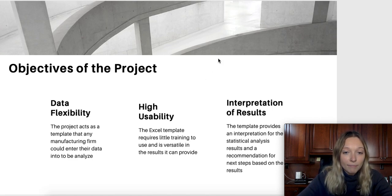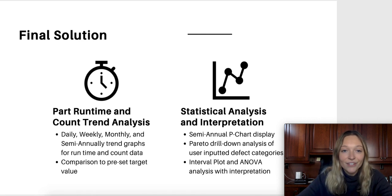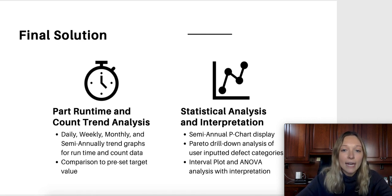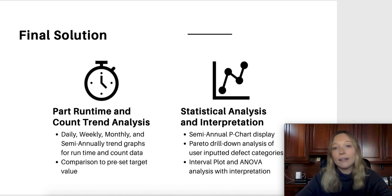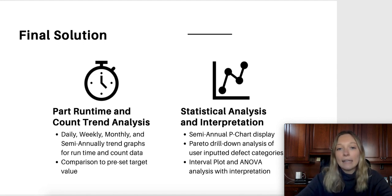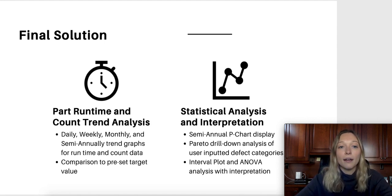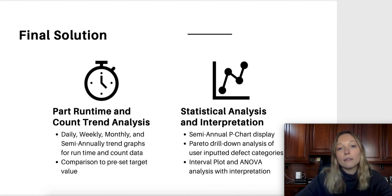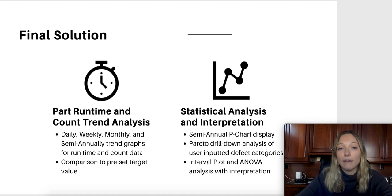The template has two different types of data input. The first type relates to trend analysis, which could be something like downtime or count per hour or per day. This data allows companies to see raw data and pick up on daily, weekly, monthly, and annual trends. The second type uses a drill down analysis technique to find the core sources of defects or waste.